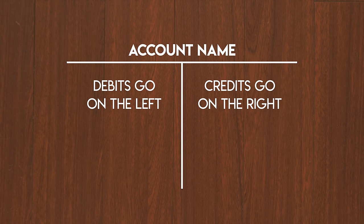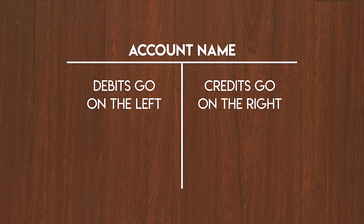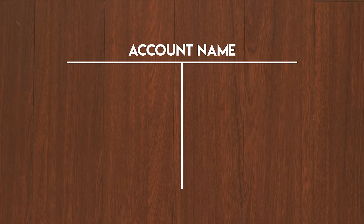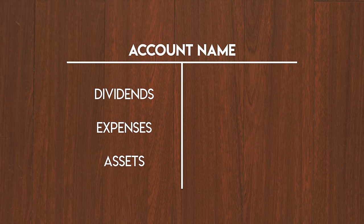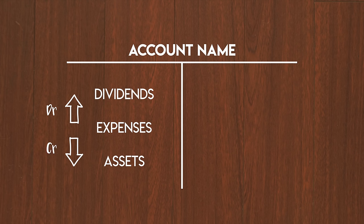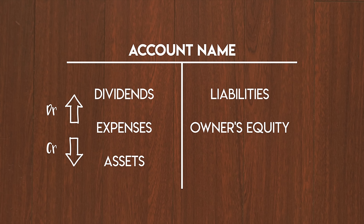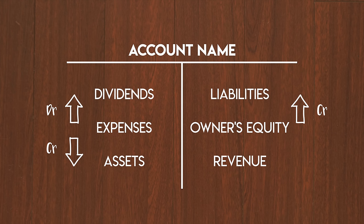Last week I taught you a simple way to remember which accounts are debits and credits: DEALER. D-E-A-L-E-R. Dividends, expenses and assets go on the left. These increase when debited and decrease when credited. Whereas liabilities, owner's equity paid in and revenue go on the right. These increase when credited and decrease when debited.